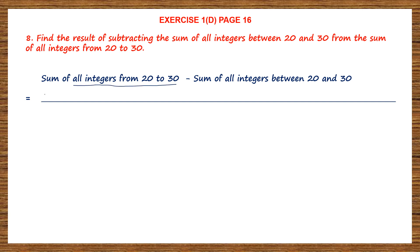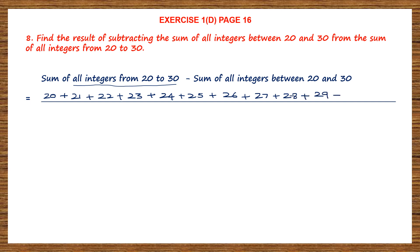So, 'from' means starting with 20 itself: 20 plus 21, 22, 23, 24, 25, 26, 27, 28, 29, and 30 — because it says 'from 20 to 30'.